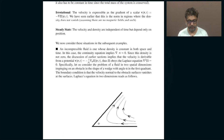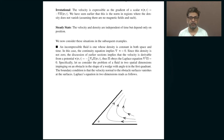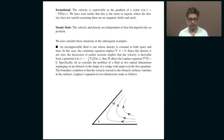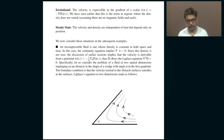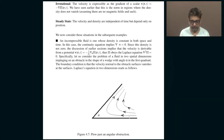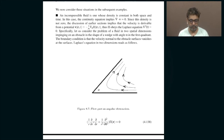Now let us consider a specific geometry, because you have to specify boundary conditions before you solve the Laplace equation. We will focus on two spatial dimensions where there is an obstacle in the shape of a wedge with angle alpha. The boundary condition is that the velocity normal to the obstacle vanishes at the surfaces — the fluid flows along the surface, so the net velocity perpendicular to the surface is zero.